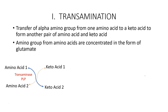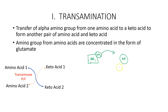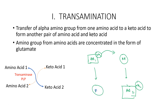Transamination is the transfer of the alpha amino group from one amino acid to a keto acid to form another pair of amino acids and keto acids. For example, amino acid 1 donates its alpha amino group to a keto acid — the keto acid then becomes a new amino acid, and the original amino acid becomes a new keto acid.